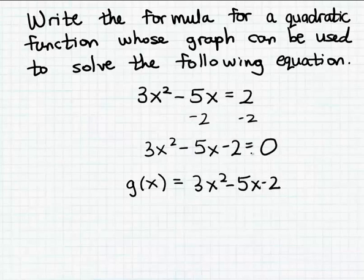then we will have the solutions to this equation, 3x² - 5x - 2 = 0. And of course, this equation is equivalent to the original equation that we were asked to solve, 3x² - 5x = 2.